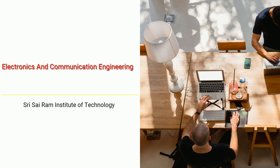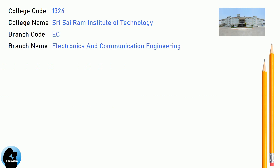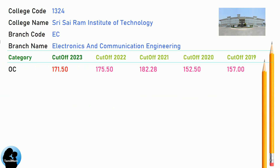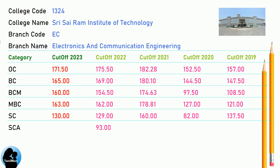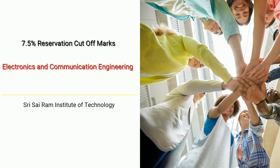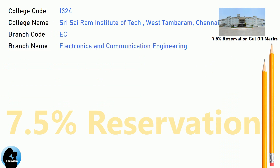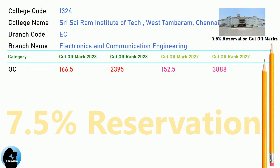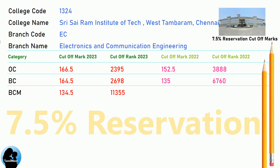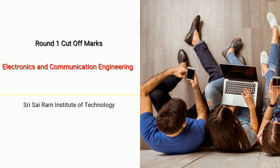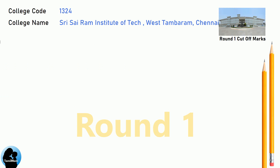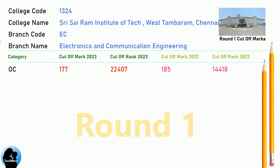DNA Cut-Off for Shri Sai Ram Institute of Technology in Electronics and Communication Engineering. DNA 7.5 Reservation Cut-Off for Shri Sai Ram Institute of Technology in Electronics and Communication Engineering. DNA Round 1 Cut-Off for Shri Sai Ram Institute of Technology in Electronics and Communication Engineering.